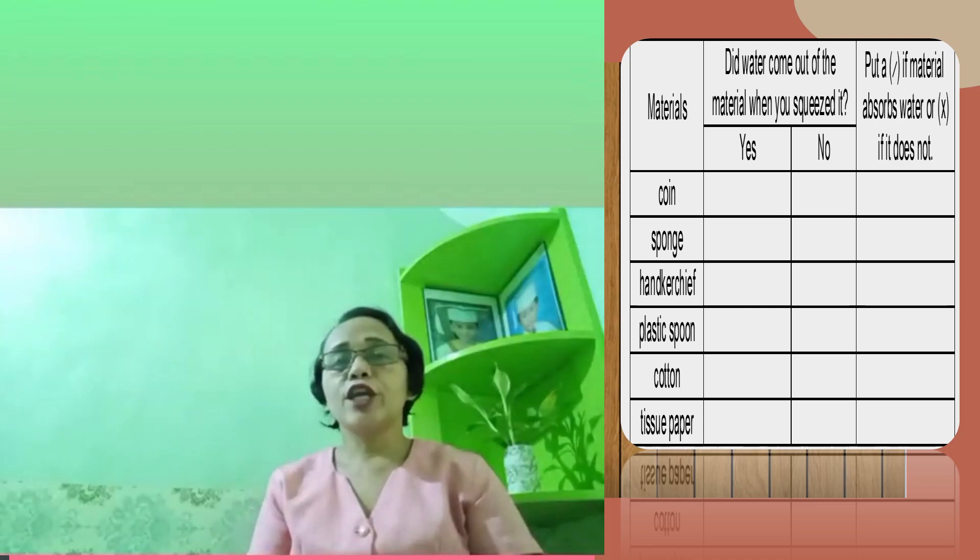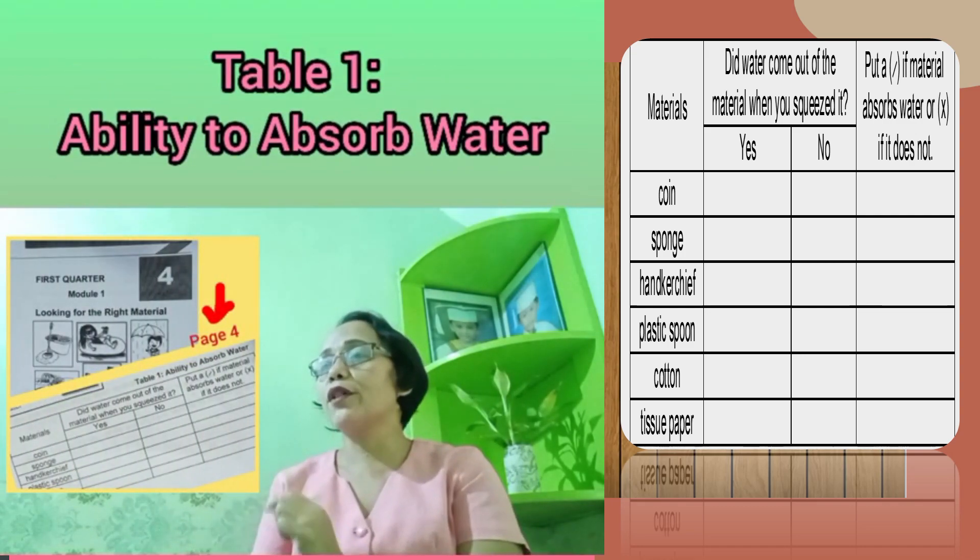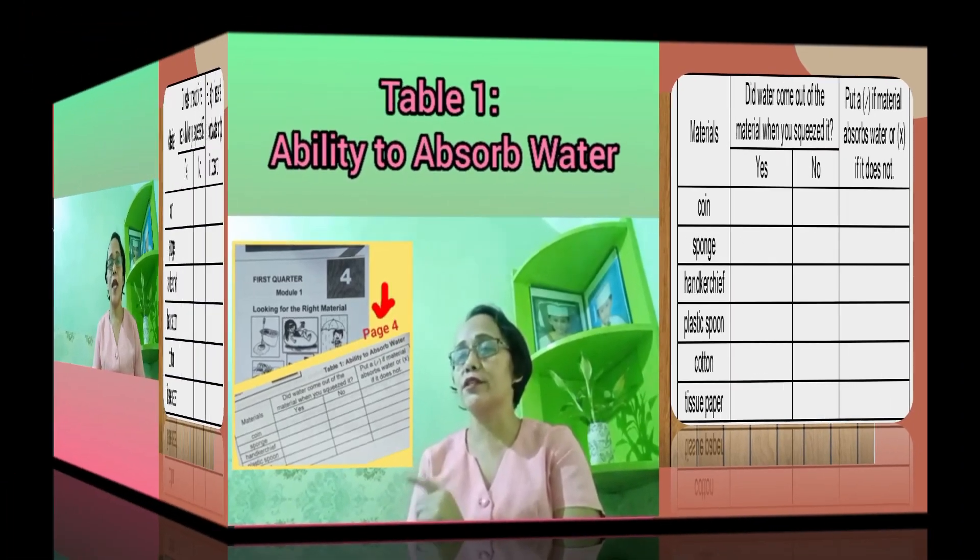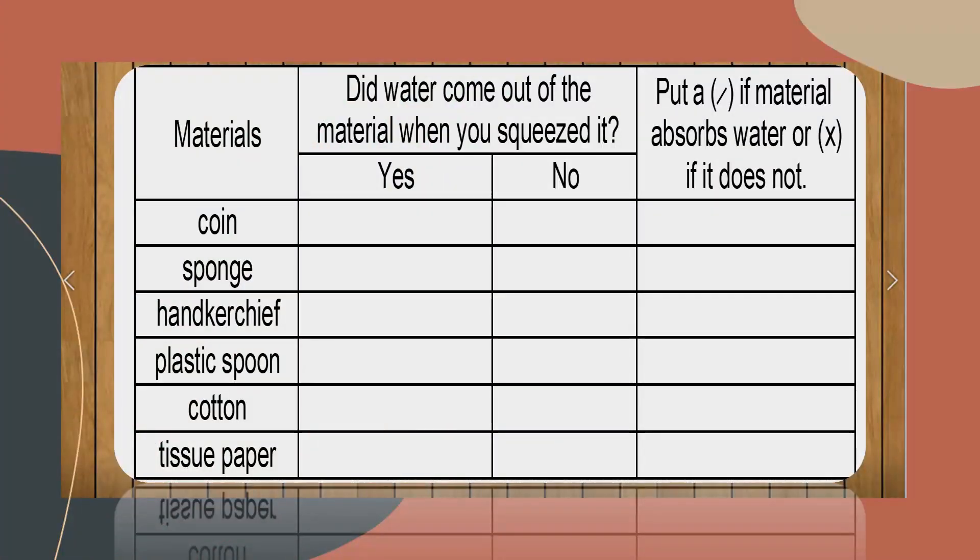After performing your activity, you may now answer the observation table on page 4 of your module. Table number 1: Ability to absorb water. Did the water come out of the material when you squeeze it? Okay, put check if the material absorbs water or X if it does not. Do you get all the points right? Okay.